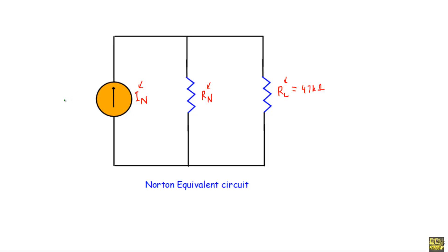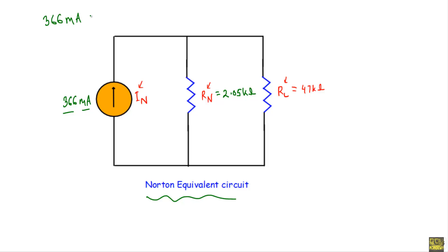So the Norton equivalent circuit has IN = 366 milliamperes and RN = 2.05 kΩ. This calculated result is very close to our simulated result. That's it, thank you.